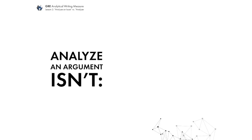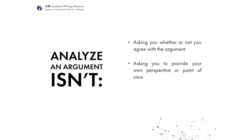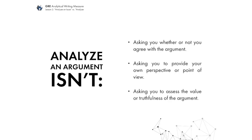Let's talk about what Analyze an Argument is NOT, because this is a big sticking point for people. Analyze an Issue is easy to understand — they just want your opinion. Analyze an Argument is more nuanced. They're not asking you whether you agree; in fact, saying whether you agree can actually lower your score. They're not asking for your own perspective or point of view at all. They're asking you to analyze, break down, and evaluate the author's point of view. They also are not asking you to assess the value or truthfulness of the argument — even if you totally disagree, keep your opinion to yourself when analyzing an argument.